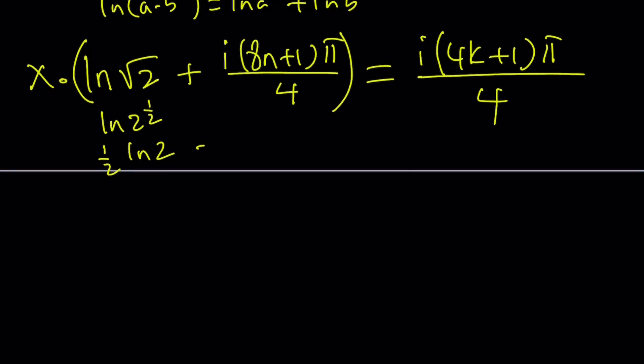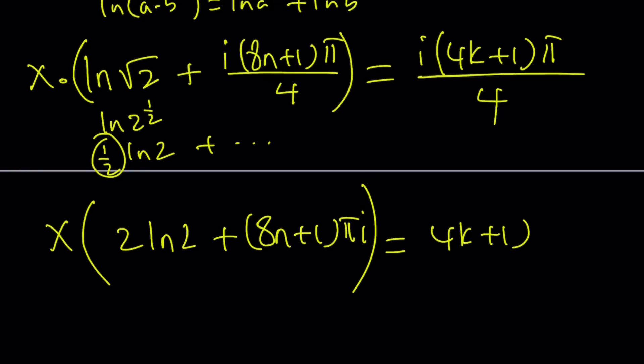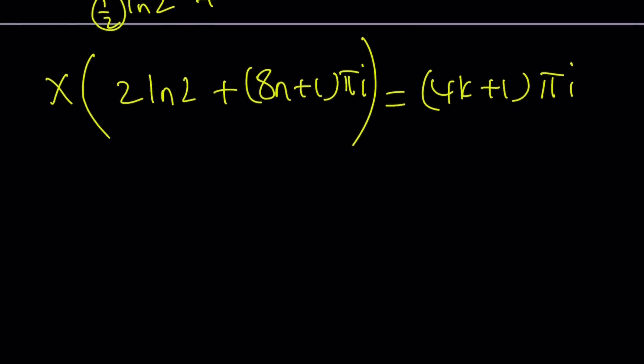What I'm going to do next is multiply both sides by 4 to get rid of the fraction. Here's what it's going to look like. x times, and when you multiply 1/2 by 4, that's going to give you 2ln(2), plus (8n + 1)πi. And this is going to equal (4k + 1)πi. We got rid of the 4th. Everything looks better.